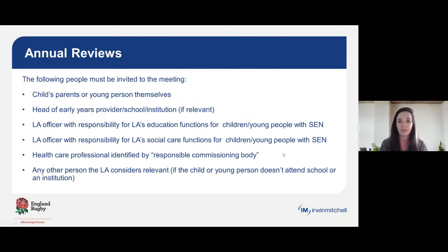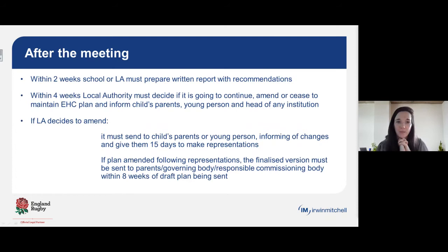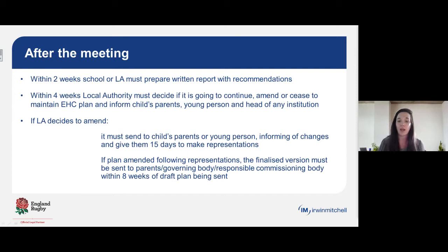It's really important to use annual reviews to ensure plans are properly drafted, pulling in new information and updated professional reports and looking at outcomes. A list of people must be invited to the meeting, and if there are others — for example a therapist supporting your child — you can request they also attend. After the annual review meeting, the school has two weeks to send the relevant paperwork to the local authority, including any requested changes to the EHCP. The local authority then has four weeks to decide whether to amend the EHCP, continue it as is, or cease it.